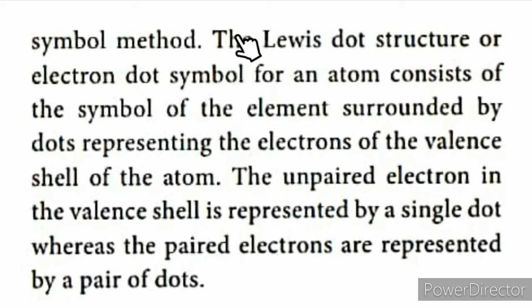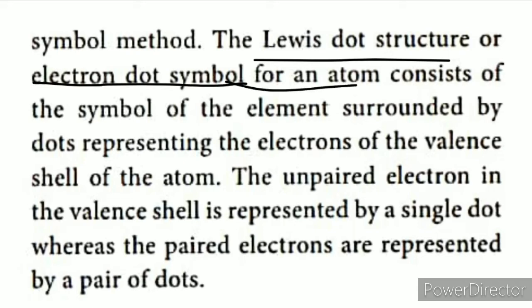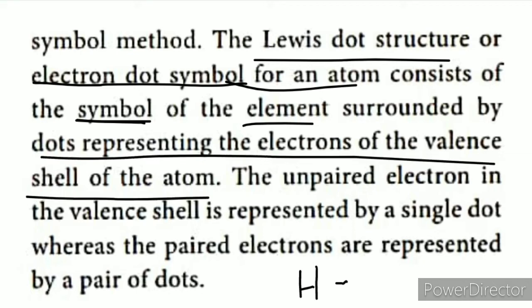Representing the valence electrons of an atom is called Lewis Dot Structure — also known as the electron dot symbol. The element is represented by its chemical symbol, and the valence electrons are shown as dots around that symbol. The dots represent the valence electrons of the atom.